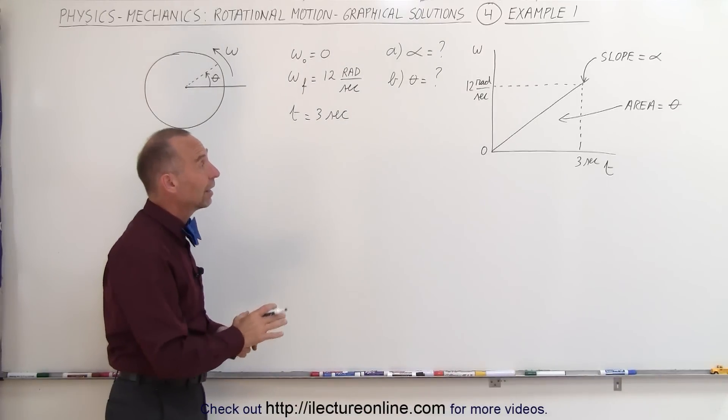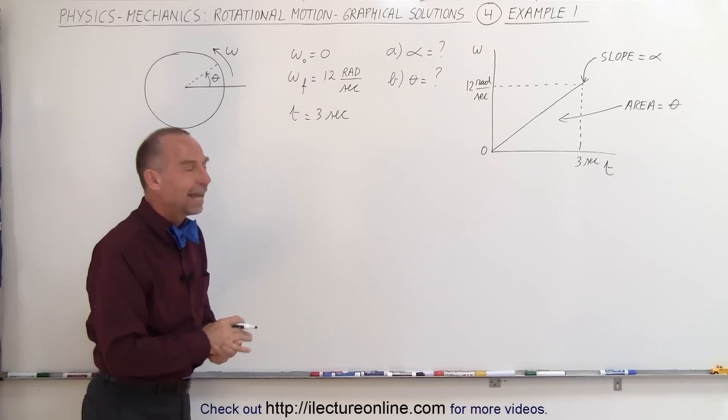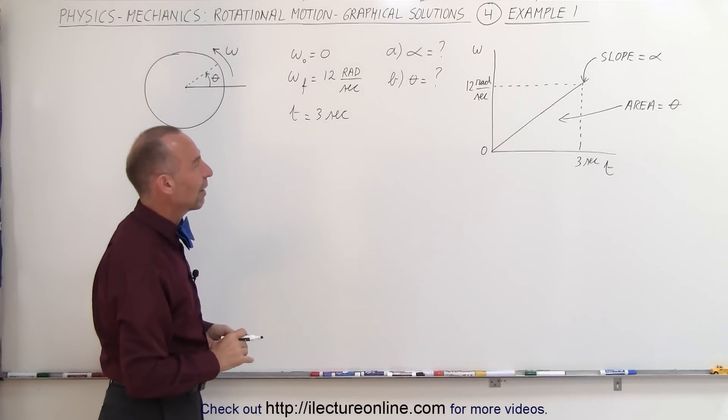So that's how we're going to find the area, or I should say the theta, the angular distance covered, and the angular acceleration using the omega versus t graph.